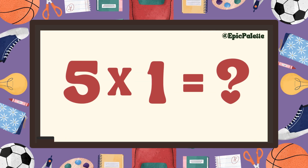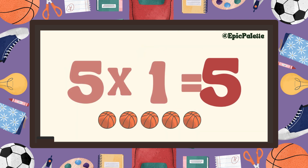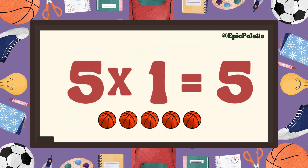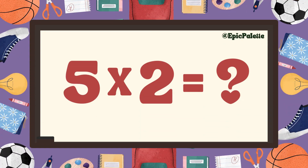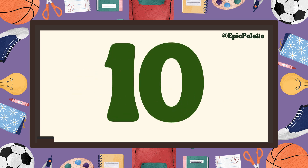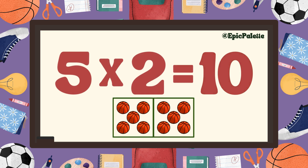Five times one equals... Five. That's right. Five times one equals five. Five times two equals... Ten. That's right. Five times two equals ten. Excellent.